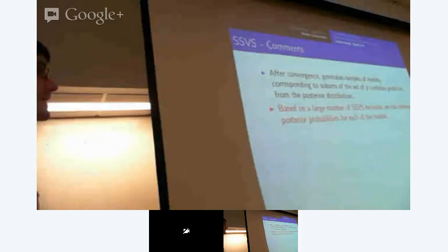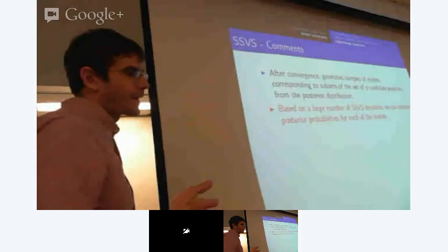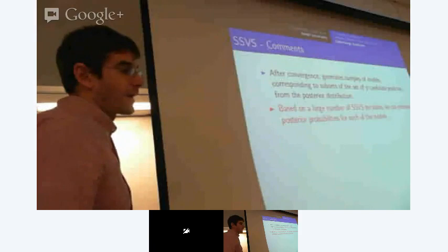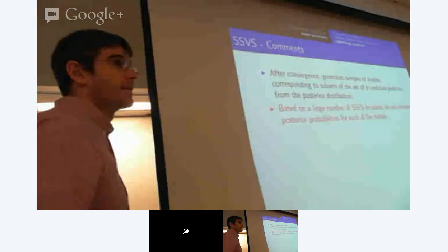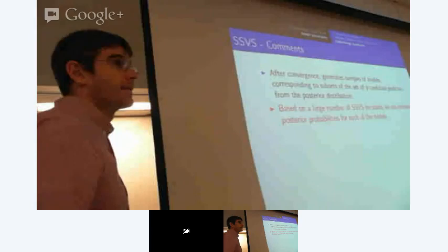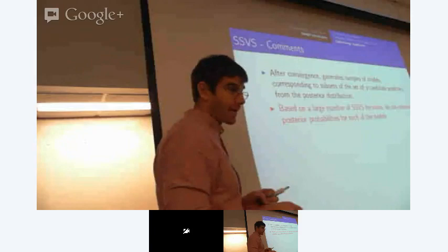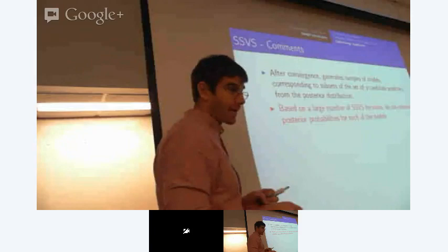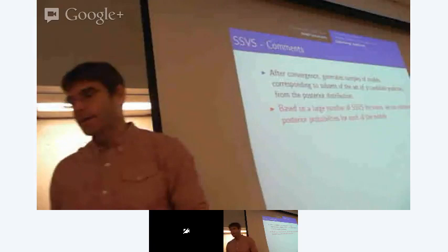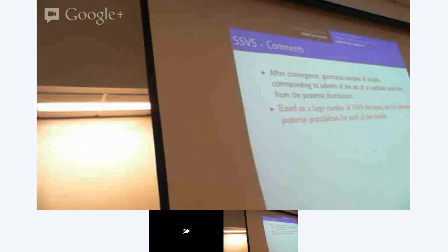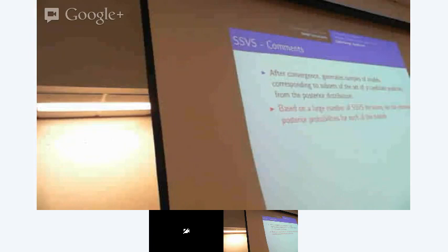Jim Berger showed that if the design is orthogonal and your goal is prediction, the right thing to do is use the median probability model: compute the marginal inclusion probability for each predictor, include those above 0.5 and exclude those below 0.5. This gives one model, and it's a much better way to select a single model than selecting the model with the highest posterior probability.